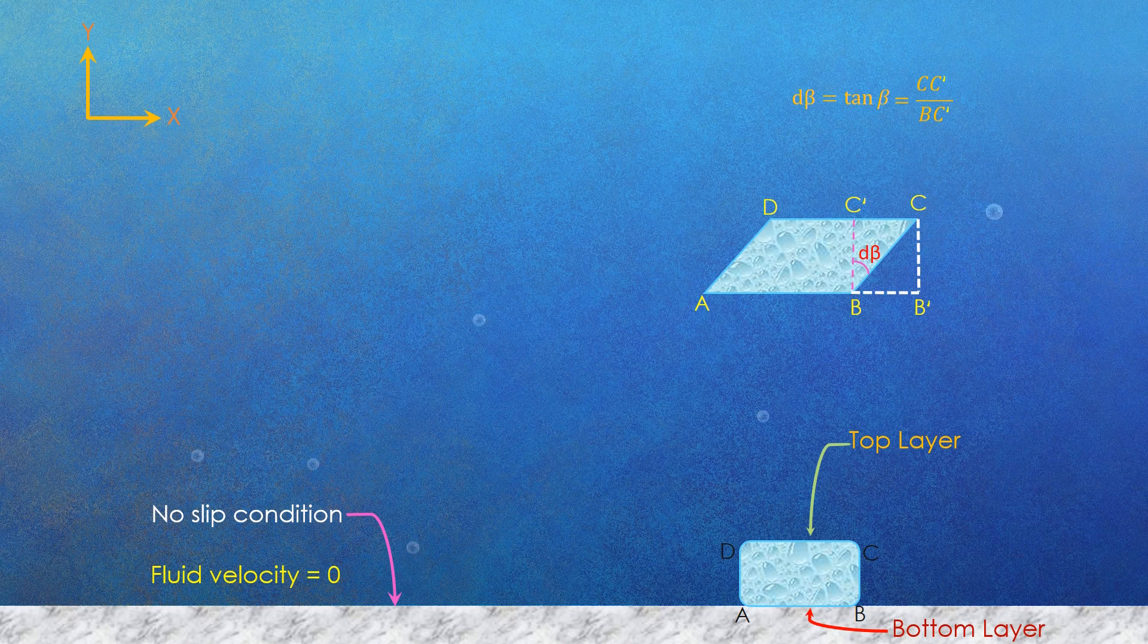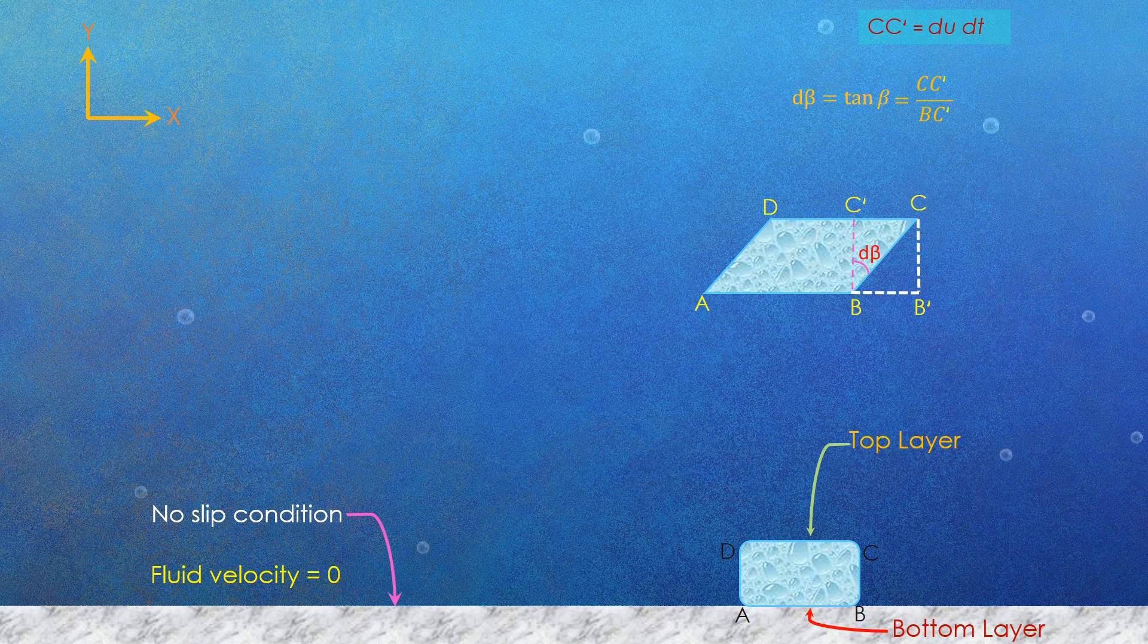The distance traveled by the upper layer CC dash can be written as du into dt, where du is the velocity of the upper layer.